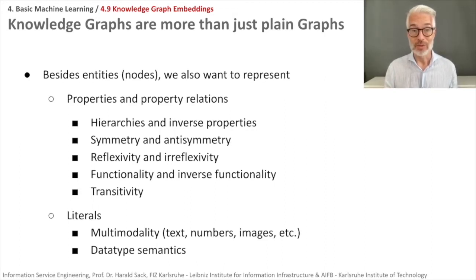Besides entities, we want to represent properties and property relations. There are hierarchies of properties, inverse properties, symmetry or anti-symmetry, reflexivity or irreflexivity. A node can be connected to itself or not. There are functional properties, inverse functionality, transitivity. We are dealing besides entities also with literals, and they can be of multimodal type: text, numbers, images.